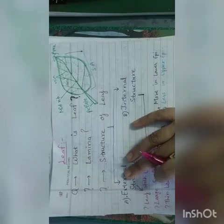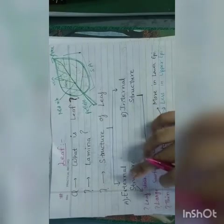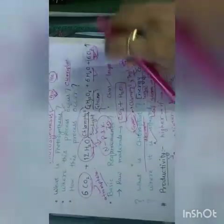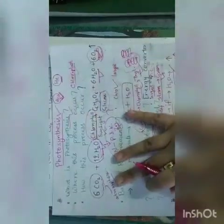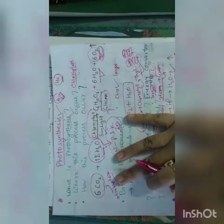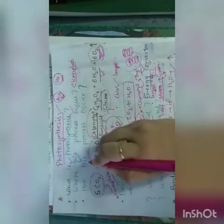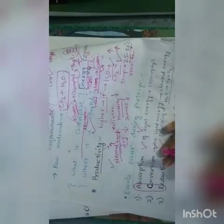Today our class is about leaf. In our previous topic, I am giving you a summary. In our previous topic we talked about photosynthesis - its definition, whole process and equation, productivity, and events that occur during photosynthesis. We talked a lot about all of these things.